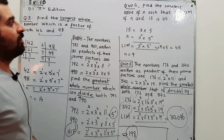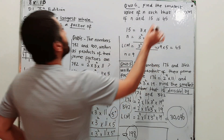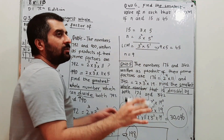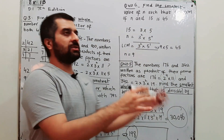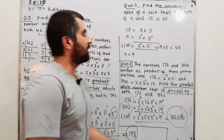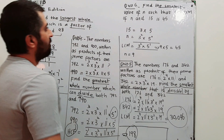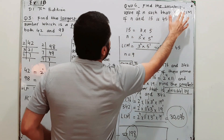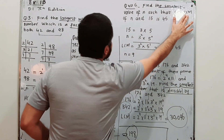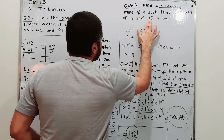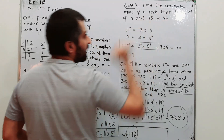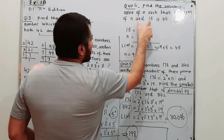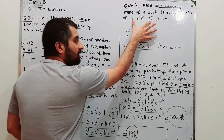Question number 6: find the smallest value of n such that the LCM of n and 15 is 45. The word 'smallest' is mostly referring to LCM. We need LCM(n, 15) = 45.